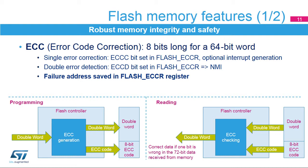Data and flash memory words are 72 bits wide: 8 bits are added per each double word of 64 bits. The ECC mechanism supports one-error detection and correction and two-error detection. When one error is detected and corrected, the ECCC flag (ECC correction) is set in the flash ECC register (FLASH_ECCR) and an interrupt can be generated. When two errors are detected, the ECCD flag (ECC detection) is set in FLASH_ECCR and an NMI is generated.